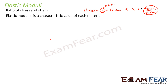Elastic modulus is a characteristic value of each material. What do you mean by this? It means that for a particular material, the elastic modulus will be a specific value. For example, gold will have a specific value of elastic modulus, and rubber will have its own specific value. Each material will have its own elastic modulus value.